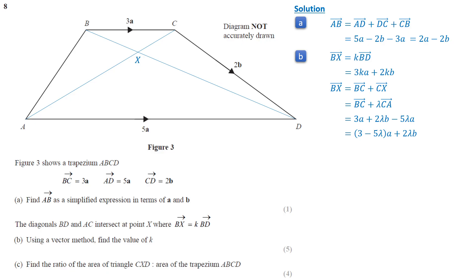Factoring out a and comparing this expression with 3k·a plus 2k·b, we equate the coefficients of b to get k equals lambda. We equate the coefficients of a: 3k equals 3 minus 5·lambda. Since k equals lambda, k equals 3 over 8. This means the ratio of BX to BD is 3 to 5.